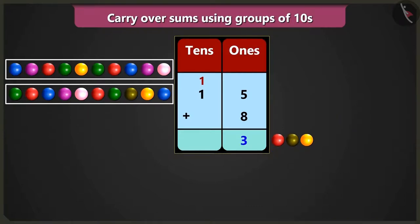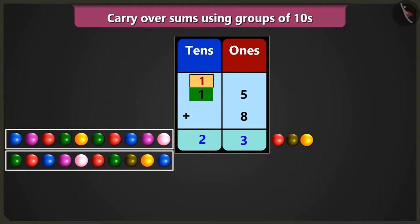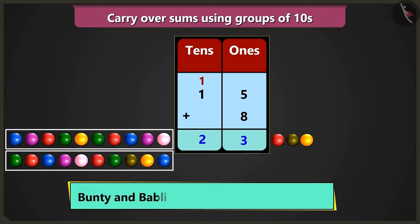Yes, so in the box of tens, when we add 1 tens and another 1 tens, we will get 2 tens, that is 20. This means we earlier had 2 tens and 3 ones, that is 23 marbles.